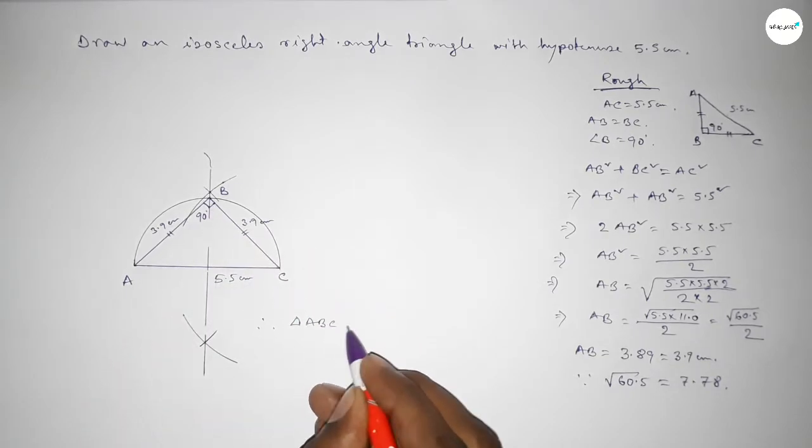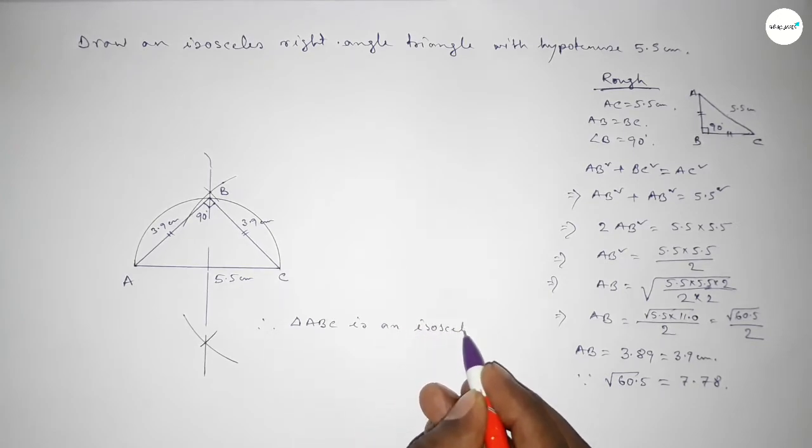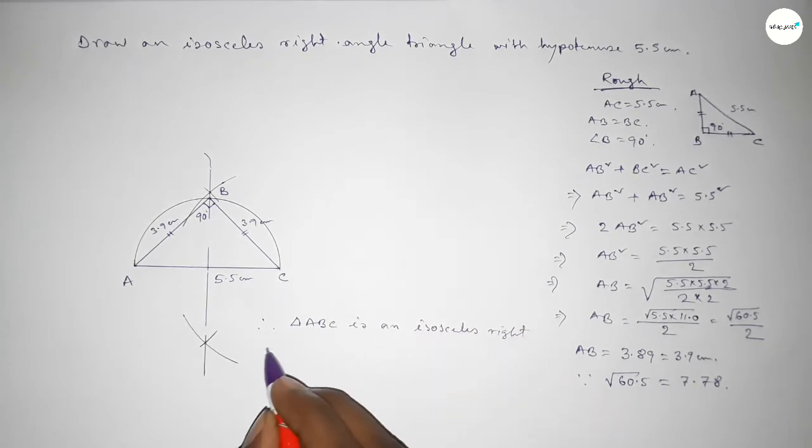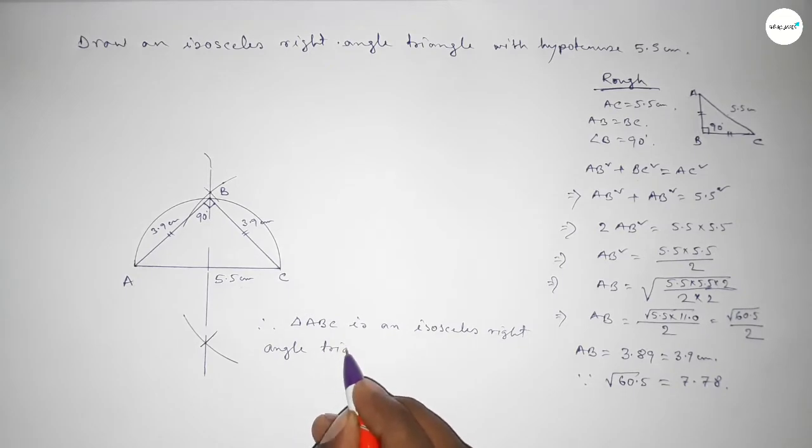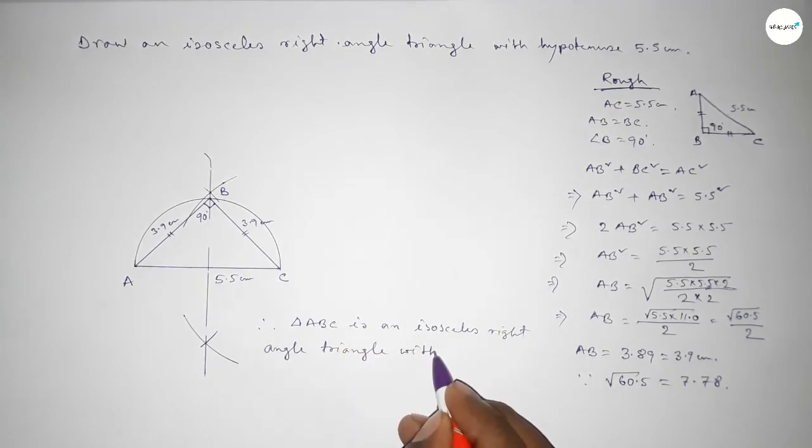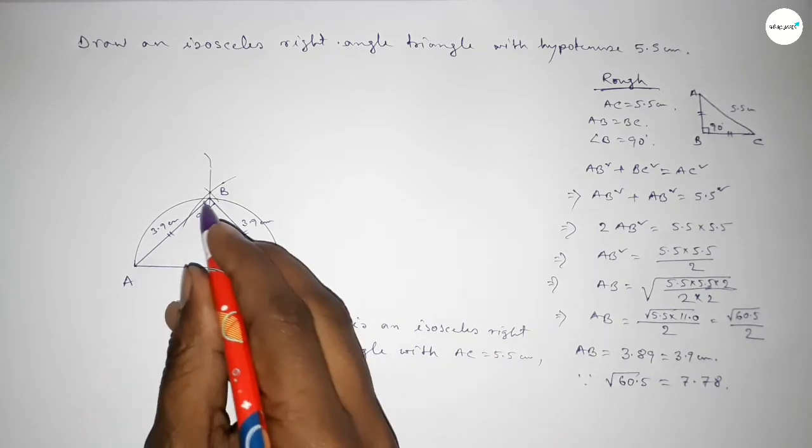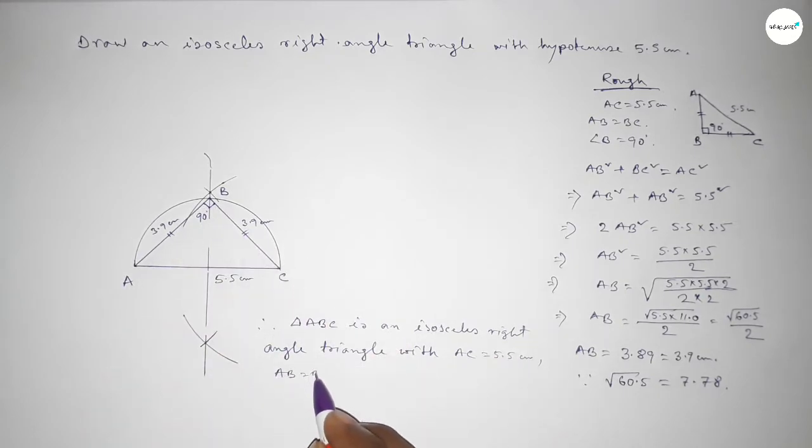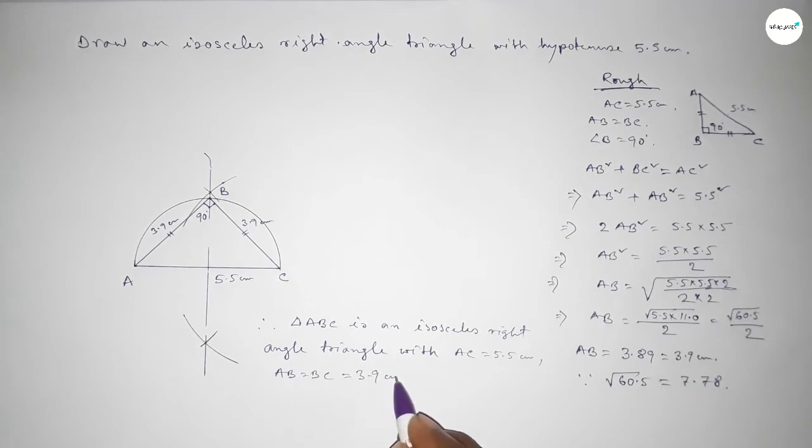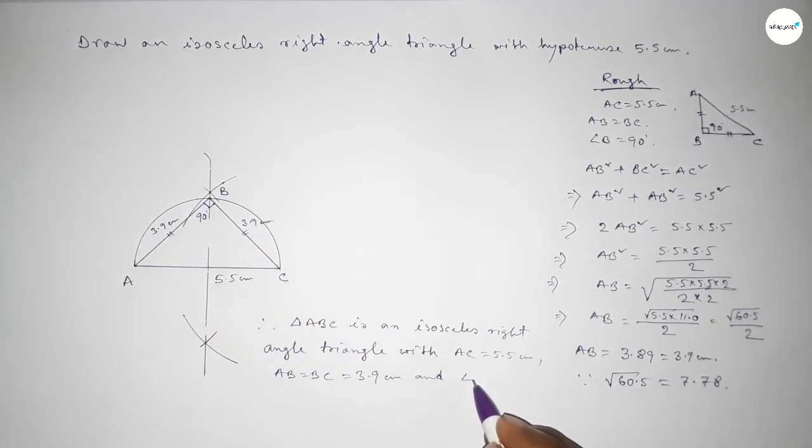Therefore, triangle ABC is an isosceles right angle triangle with given hypotenuse AC equal to 5.5 centimeter, two equal sides AB equal to BC equal to 3.9 centimeter, and angle B equal to 90 degrees. That's all. Thanks for watching. If this video is helpful, please share it with your friends.